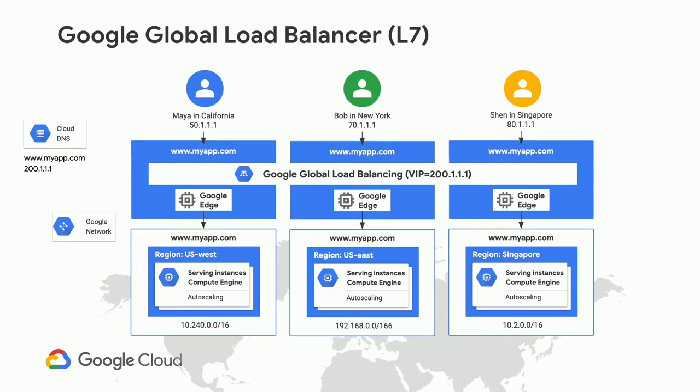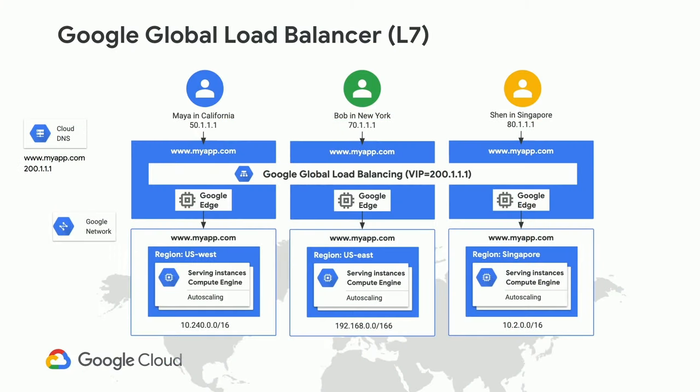This is very similar to CDN. Our CDN actually lays parallel to this — when you have CDN content, this is the first thing you hit, then it redirects to CDN. Maya, Bob, and Shen in this example are all hitting the same IP and getting pushed to serving backends in their respective regions. This is probably one of our most popular load balancing products. Lots of customers, even if running their own load balancer stacks, love the single Anycast VIP globally. It also helps protect against DDoS — this sits at our edge.